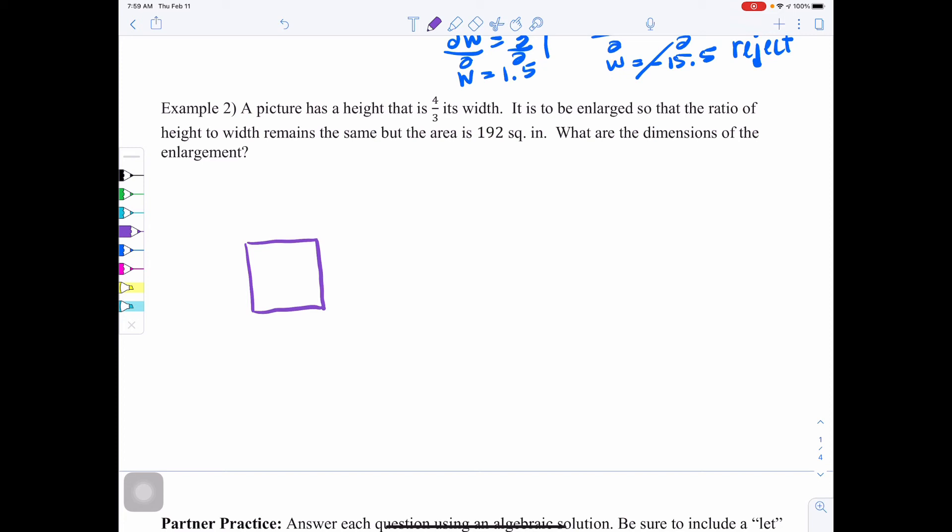They didn't tell us what the width was as far as a variable, so we'll do a let statement for ourselves. We'll say let W equal the width. And then it says its height is 4 thirds the width. So 4 thirds W is equal to the height. So when we draw this and we label the parts, this is W, this is 4 thirds W.